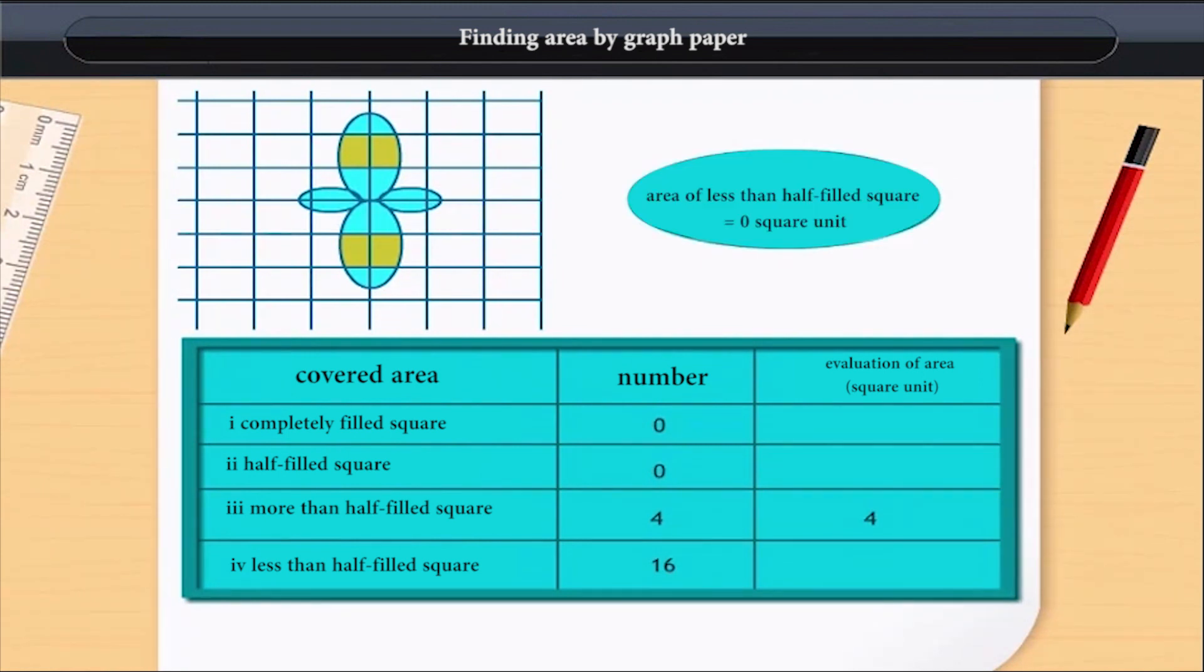Also, the total number of less than half filled squares are 16. Now, as we consider more than half filled squares as a complete square unit. Hence, area of such 4 squares is 4 square units.